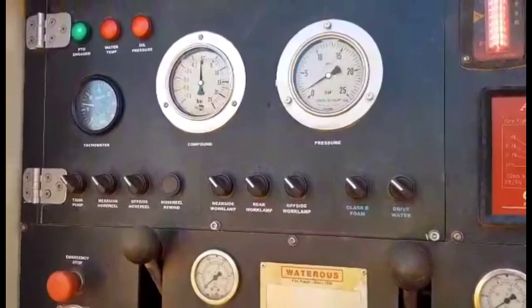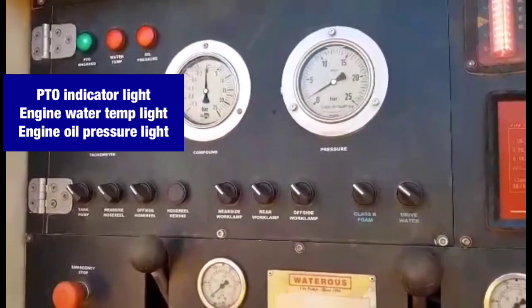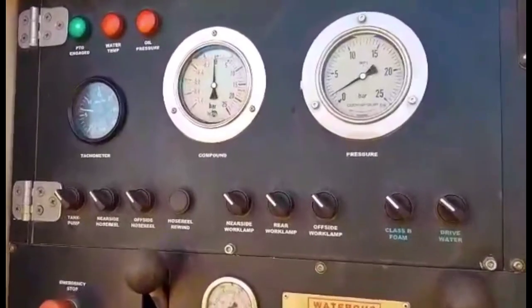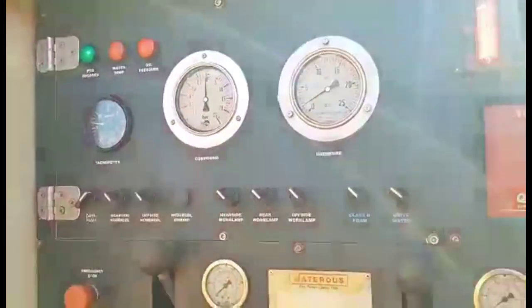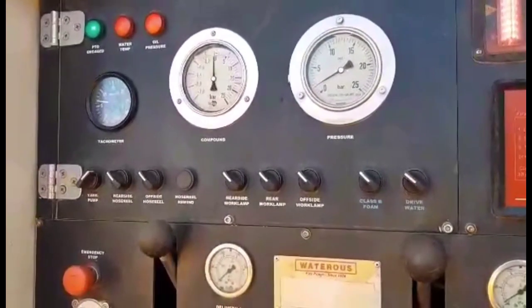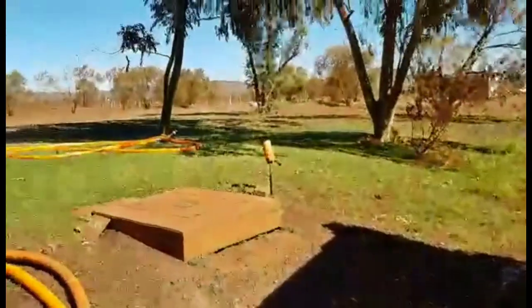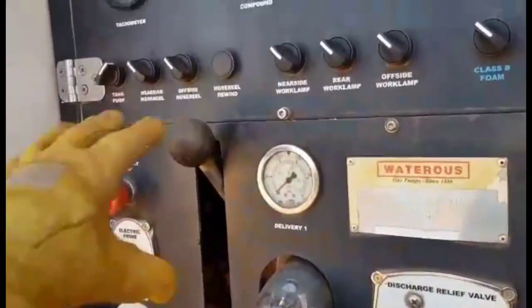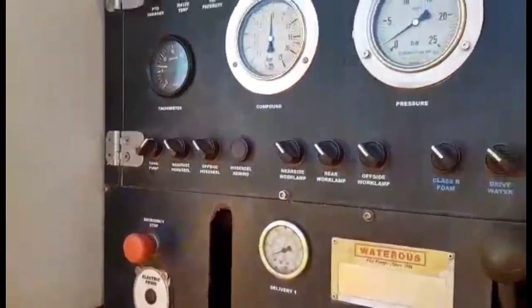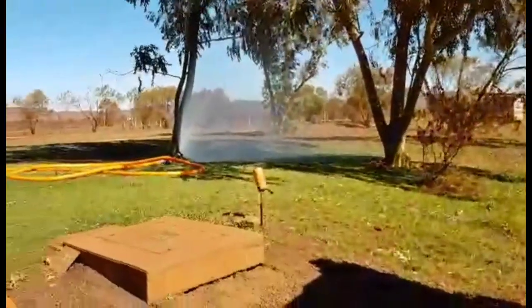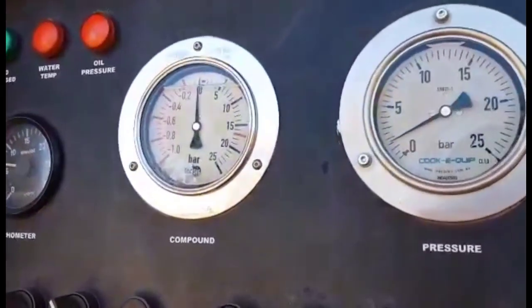So when we first arrive on scene, we need to engage the PTO. This will deliver drive to the impeller on our pump and thus give our water some energy. From here, we need to turn on our tank to pump valve. This will allow water to go from our tank to our pump. Once we've achieved that, we can attach a hose onto a delivery. When we receive the call for water on, open up our delivery. While we're doing that, we're paying attention to our gauges. We're also having a look at our branch operator to see that they're still comfortable. Once we are happy, we can then determine our operating pressure.